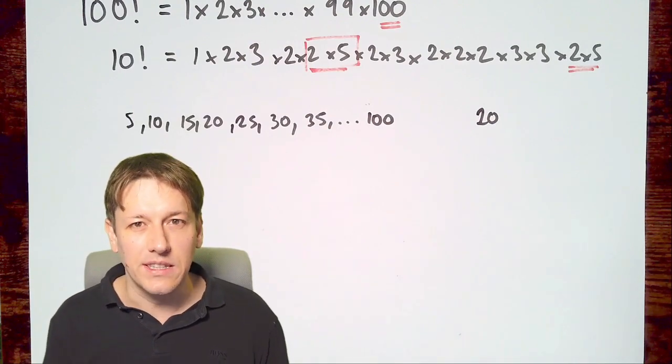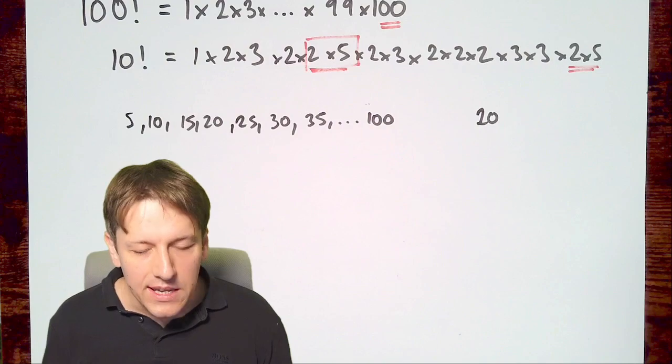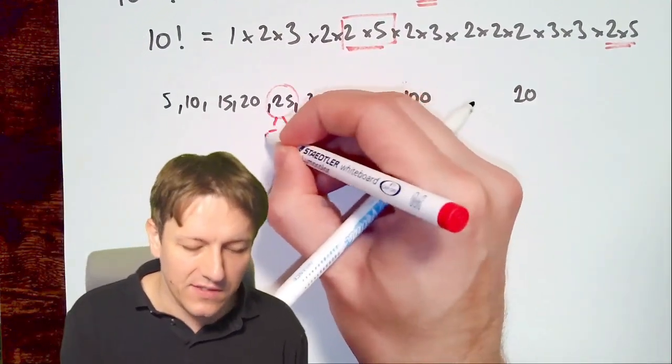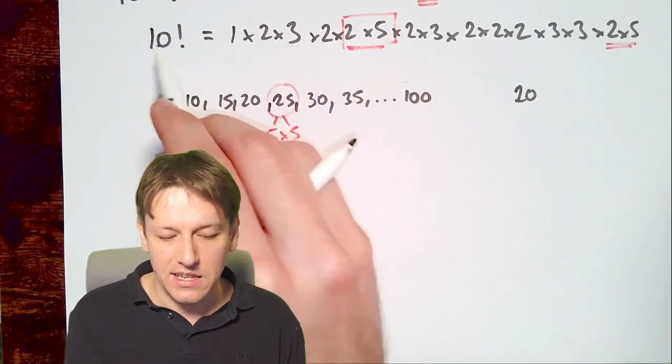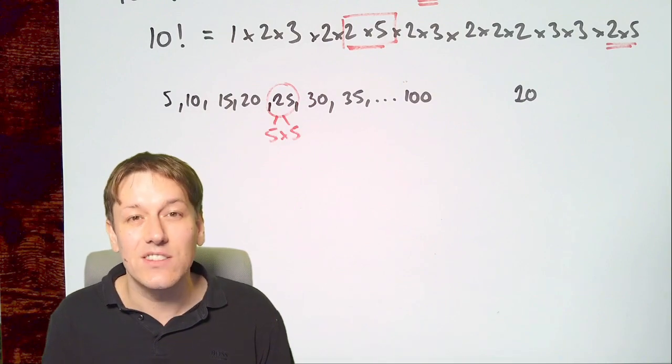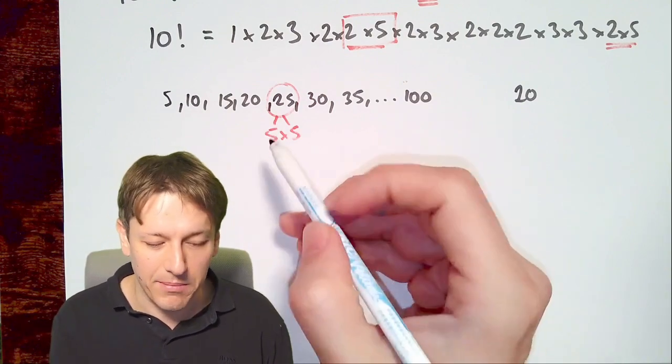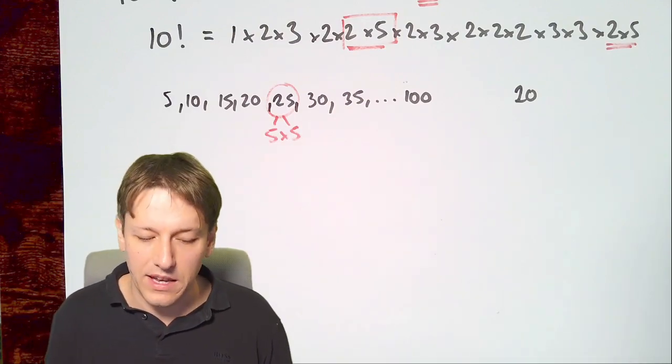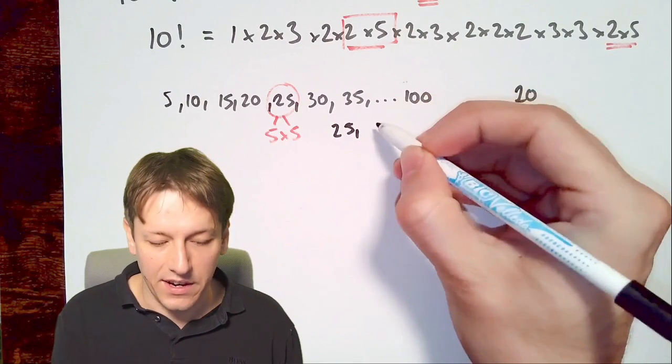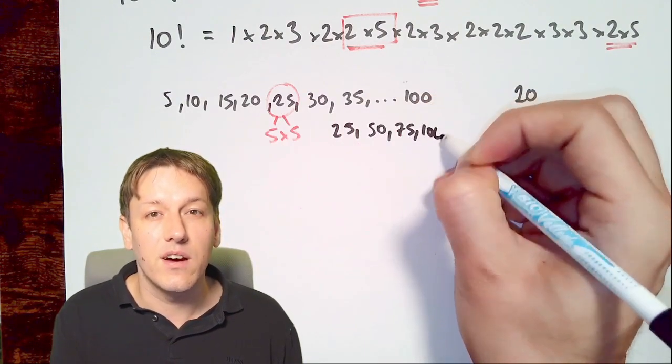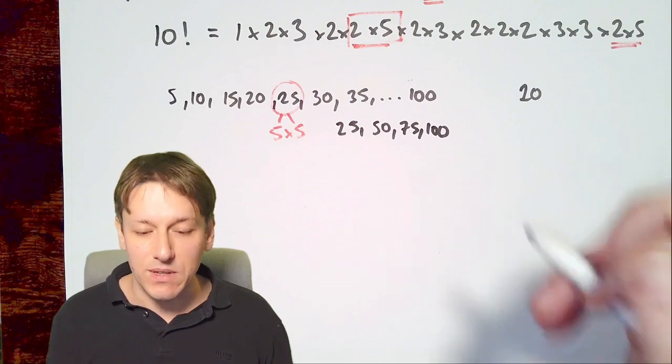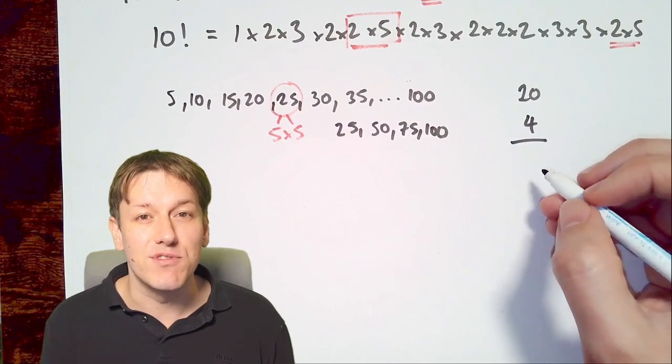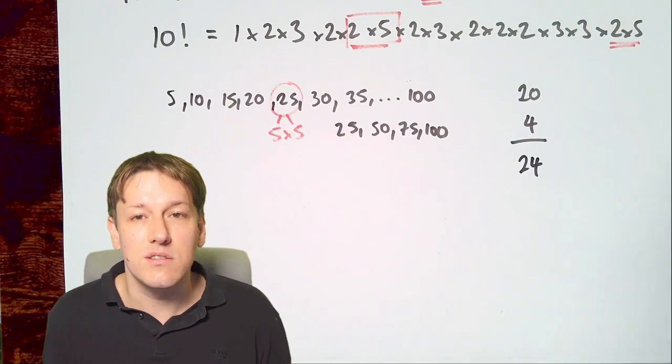But that's not quite the end of the story. Because if you think about a number like 25, well, 25 actually is 5 times 5. So when I expand that in the factorization as I've done here, we will actually end up with two zeros additionally on the end of the number. I compare this 5 with any even number and this 5 with any other even number, and it will give me something with a zero on the end. So I do need to think about 25, 50, 75, and 100 separately. They give me additional zeros, and there's four of those. So the total number of zeros on the end of 100 factorial would be 20 plus 4, which is 24.